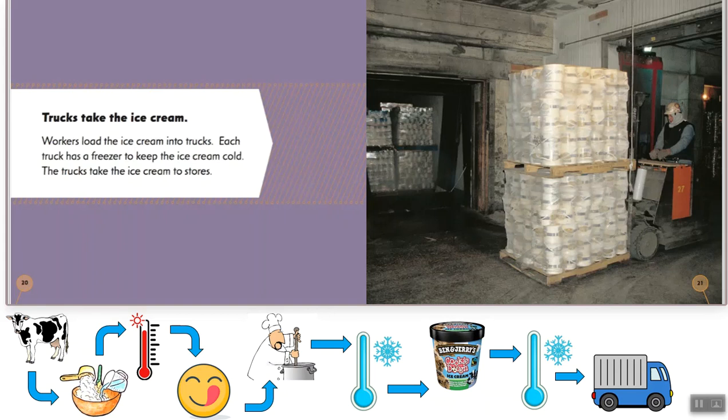Then trucks take the ice cream. Workers load the ice cream into trucks. Each truck has a freezer to keep the ice cream cold. The trucks take the ice cream to the stores. So you can see I added a truck into our sequence. We put it in the bucket, we cooled it down again, and now it's going on a truck.